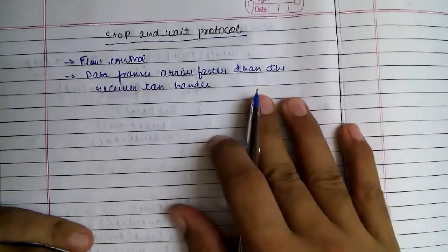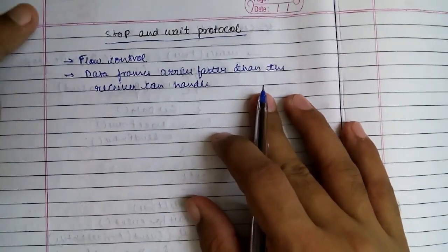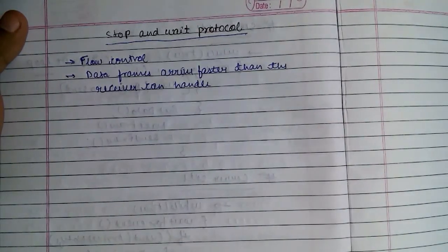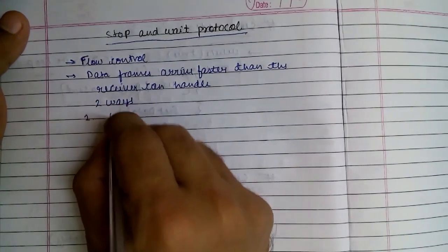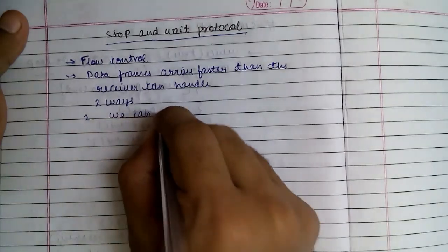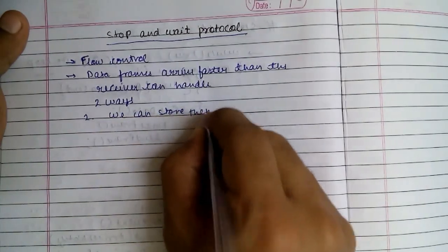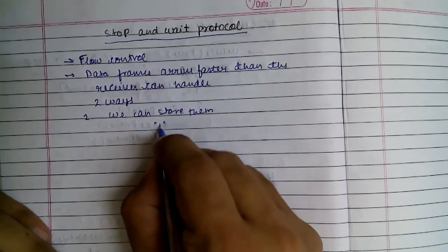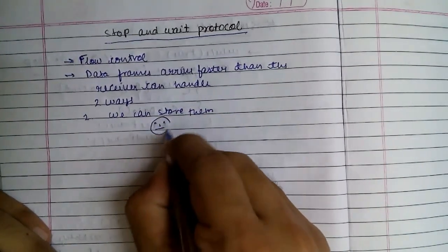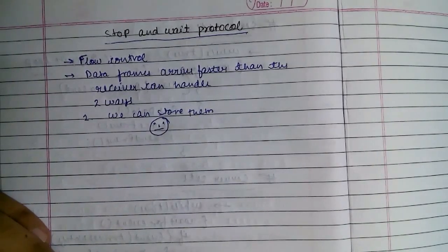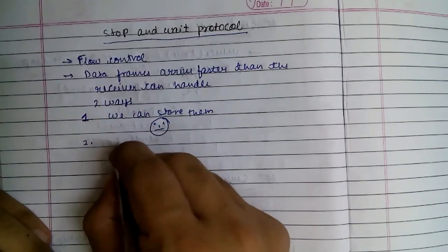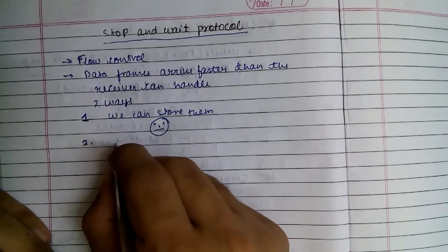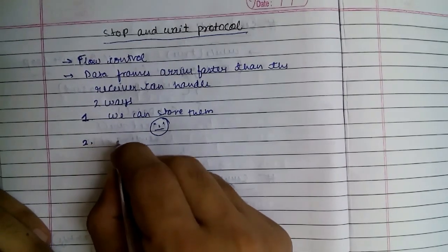So the data frames are arriving faster than our receiver can handle. So what we can do to solve this problem? Well there are two ways. The first one is we can store them. But usually this is not possible as the receiver doesn't have enough storage. So that leaves us with the second option. That is we will send a signal to the sender to slow down.